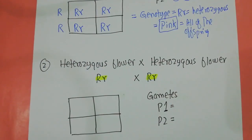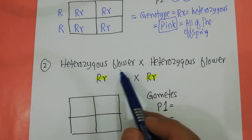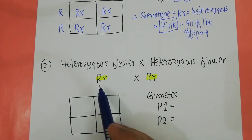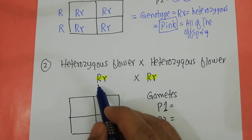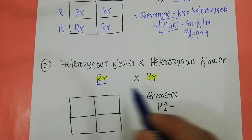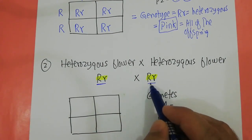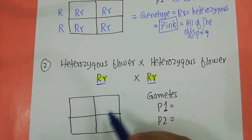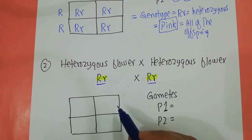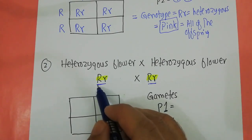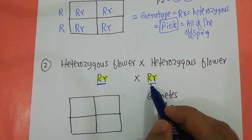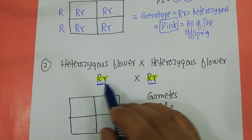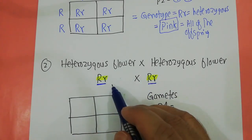Now if you are given: cross a heterozygous flower with a heterozygous flower. The genotype of each parent will be capital R and small r. All these problems are based on the flower color of the snapdragon plants. Since both parents are heterozygous — capital R small r — both of them are producing pink flowers.